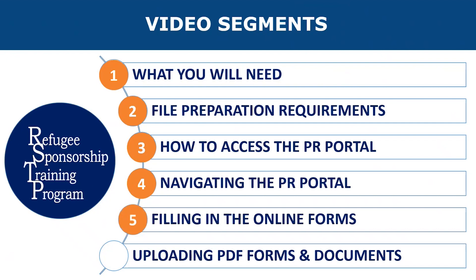Following that, you will see how to complete the online generic application and Schedule A forms, and learn about the two different ways that sponsors can get the principal applicant to sign the declaration and consent for these online forms.